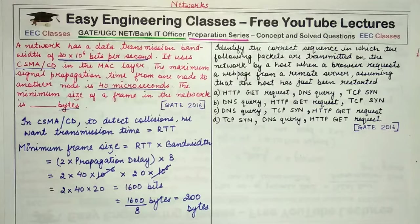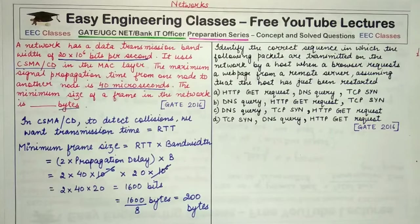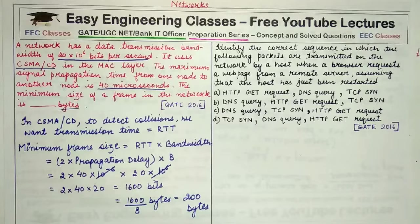Okay, so we are given four options in which each option has three values: first is HTTP GET request, DNS query, and TCP SYN. So you have to, in short, tell if a host restarts, what would be the order in which these three requests would be sent or these three operations would be performed.